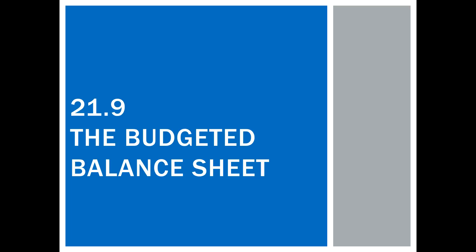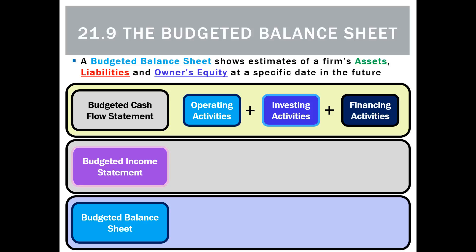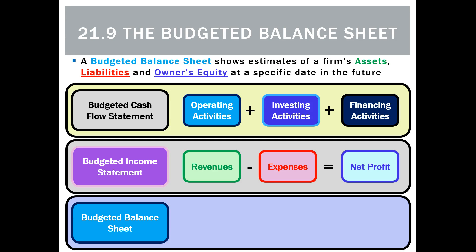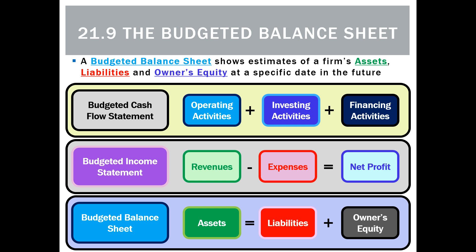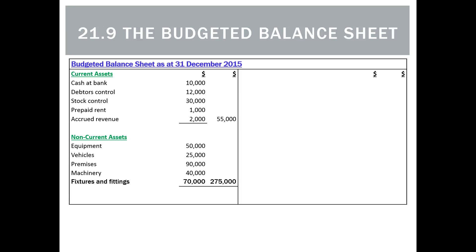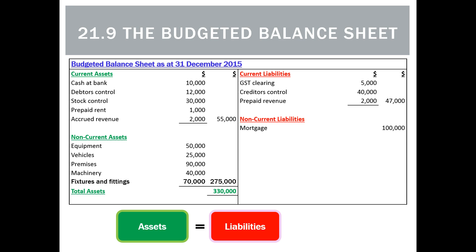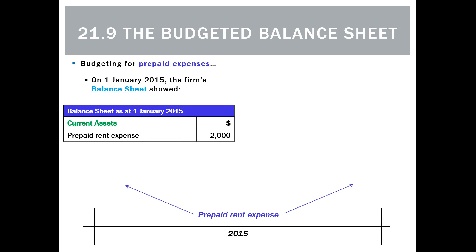The last report we need to do a budget for is the balance sheet. When we did a budgeted cash flow statement, we budgeted for future operating, investing, and financing activities. When we did a budgeted income statement, we looked at expected future revenues and expenses. With the balance sheet, we're looking at expected future assets, liabilities, and owner's equity — in the exact same format, with current assets, non-current assets, current liabilities, non-current liabilities, and owner's equity.